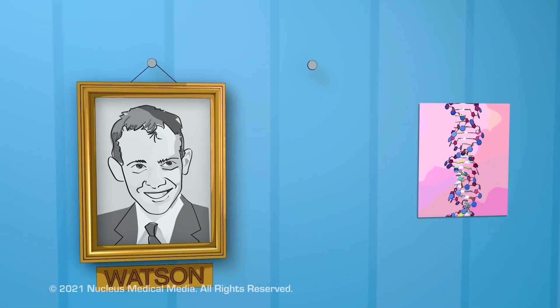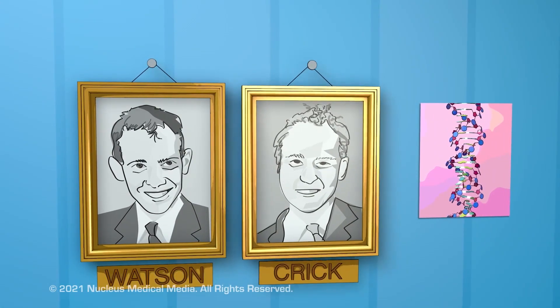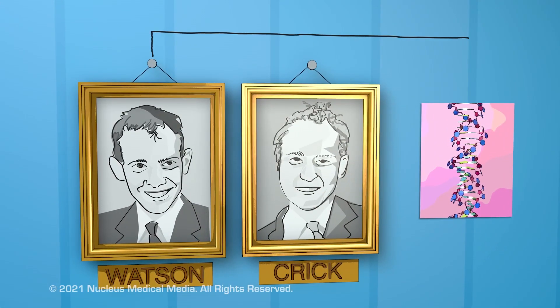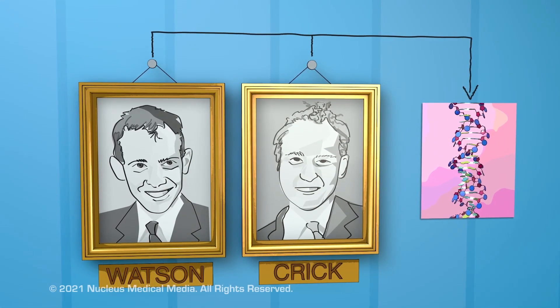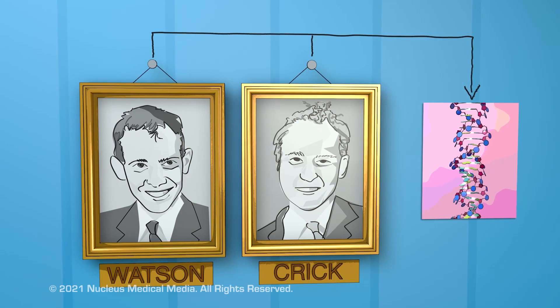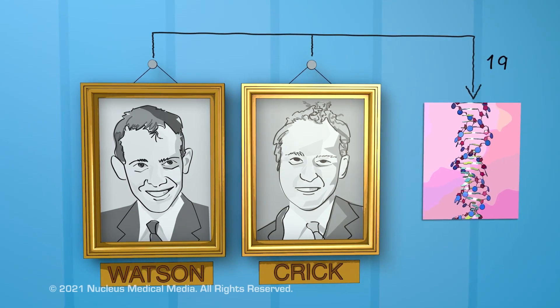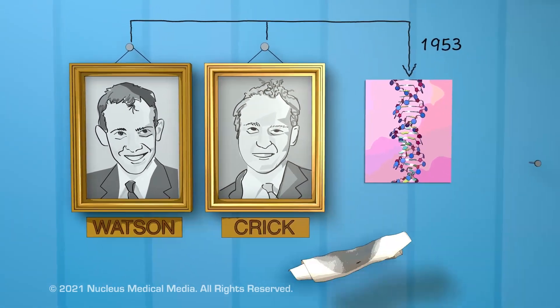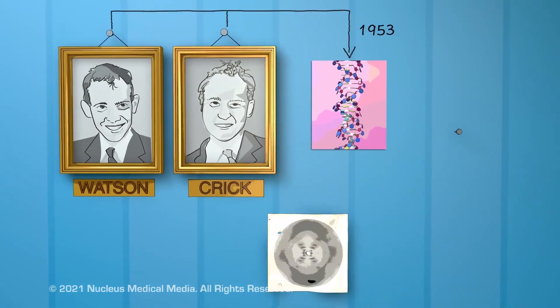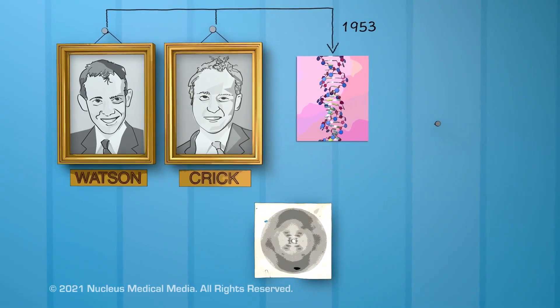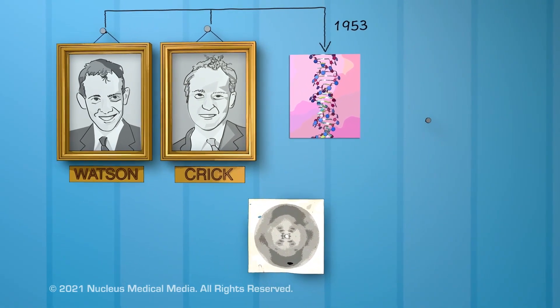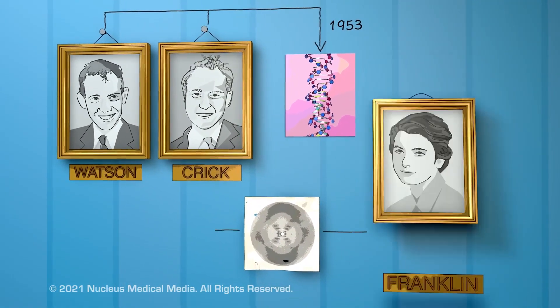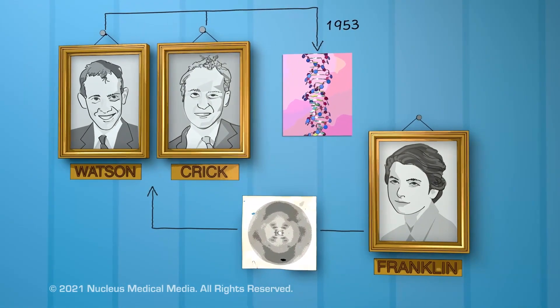James Watson and Francis Crick first described DNA's double-stranded helical structure in 1953, after looking at X-ray images of a DNA molecule taken by Rosalind Franklin.